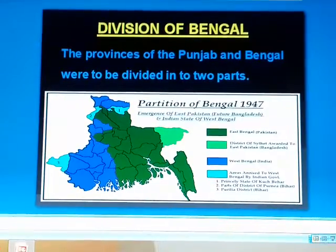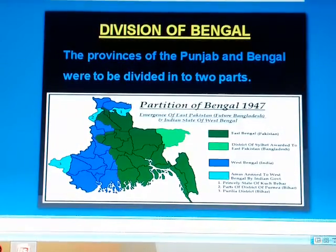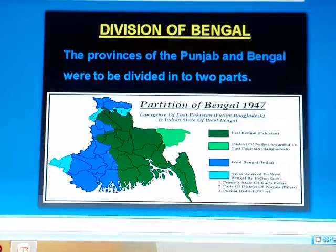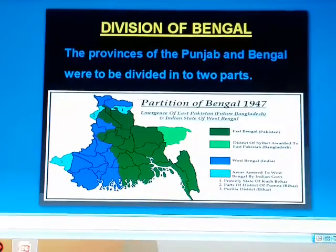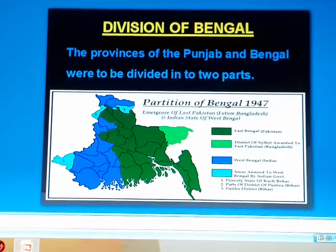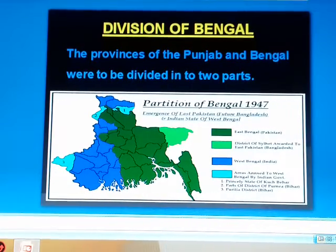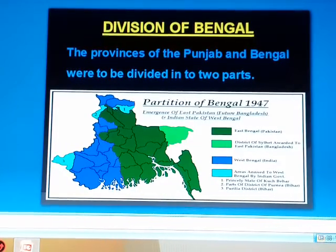Division of Bengal and Punjab: The provinces of Punjab and Bengal were to be divided into two parts. Sir Redcliffe, a British lawyer, was appointed as the chairman of the Boundary Commission. Two members each were nominated by the Congress and the Muslim League to help the chairman. The two provinces were divided into two parts. Sir Redcliffe was in contact with Nehru and Lord Mountbatten.